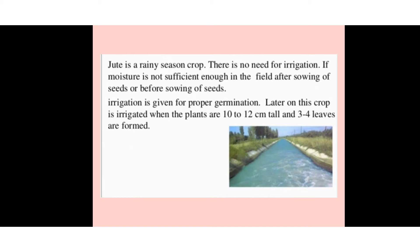Jute is a rainy season crop, most often grown in the monsoon season, requiring no irrigation since moisture is naturally available. However, if moisture is insufficient before or after sowing, irrigation is given for proper germination. Further irrigation is applied when plants are 10 to 12 centimeters tall and three to four leaves have formed.